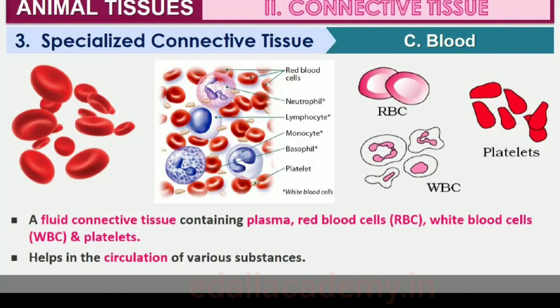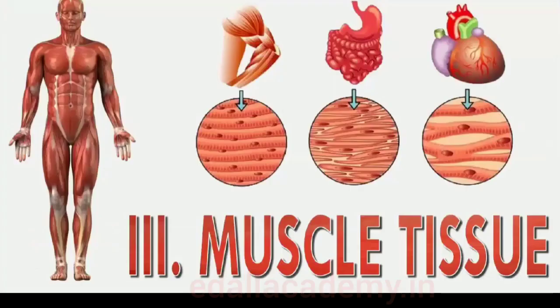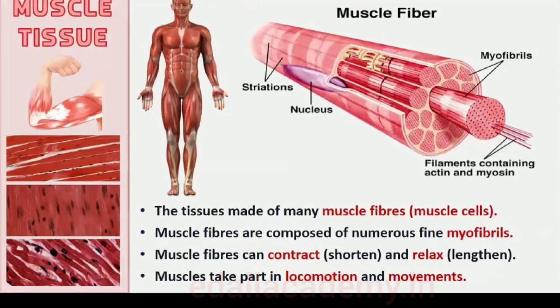Each muscle is made of many long, cylindrical fibers arranged in parallel arrays. These fibers are composed of numerous fine fibrils called myofibrils. Muscle fibers contract and shorten in response to stimulation, then relax and lengthen, returning to their uncontracted state in a coordinated fashion. Their action moves the body to adjust to changes in the environment and to maintain the positions of the various parts of the body. In general, muscles play an active role in all the movements of the body.